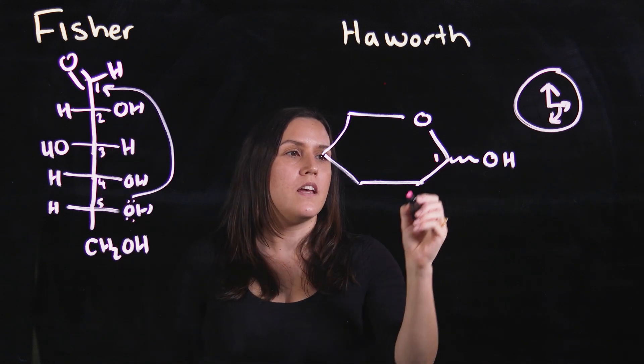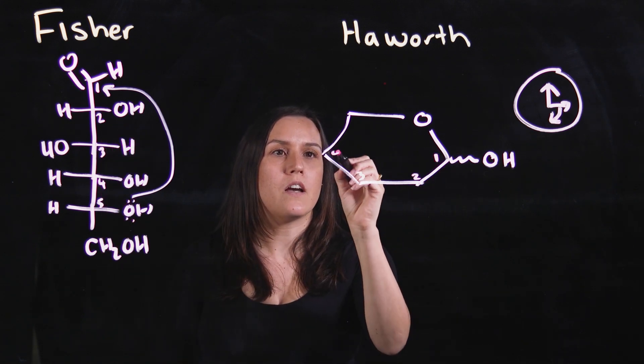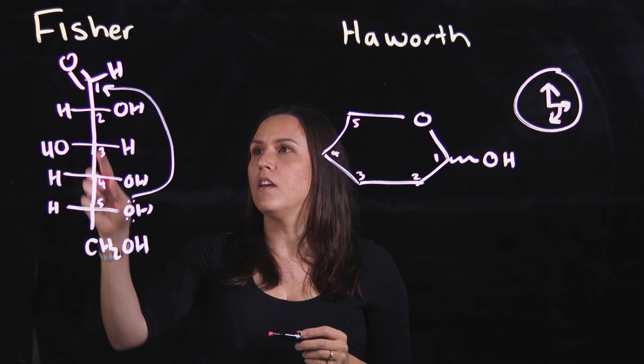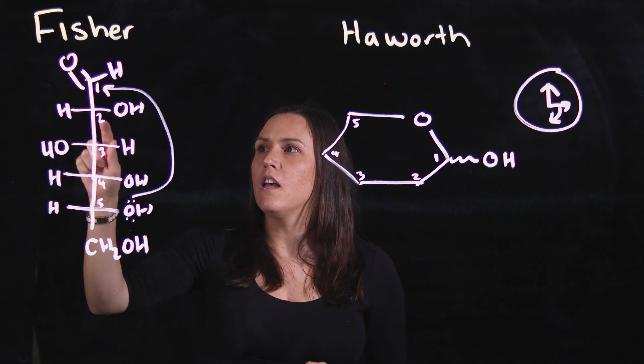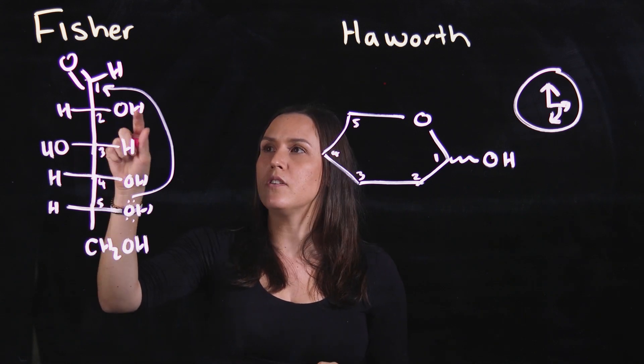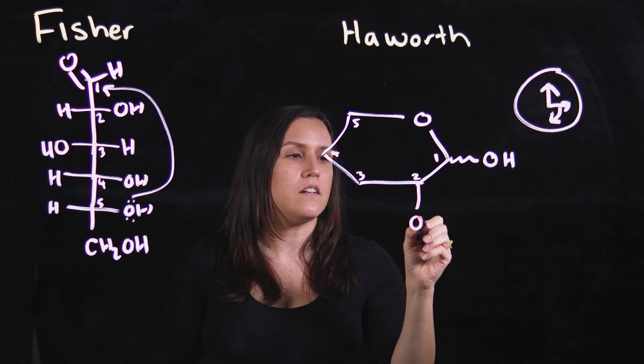Carbon 1, carbon 2, carbon 3, carbon 4, carbon 5. If I look at carbon 1, that's my anomeric racemic mixture. Carbon 2 is on the right-hand side, so it will be going down.